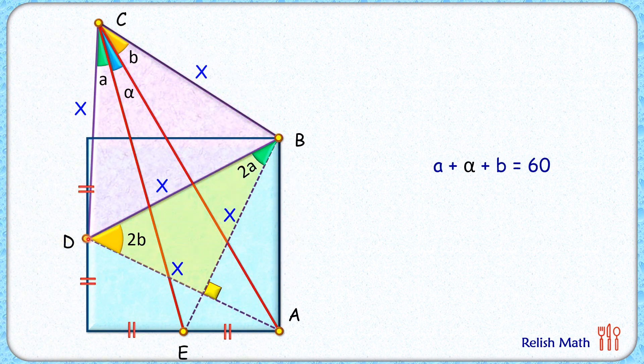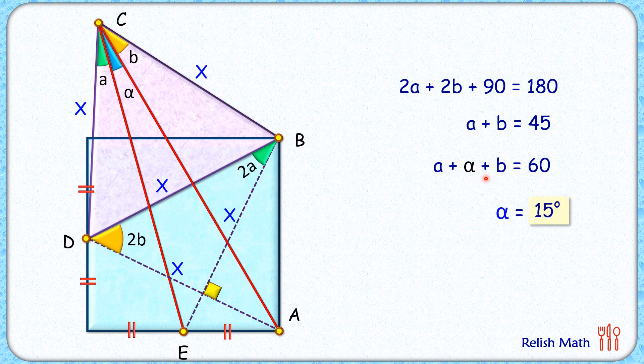Now again coming back to our original triangle which is a right angle triangle, applying angle sum property we'll get 2a plus 2b plus 90 degrees is 180, or a plus b is 45 degrees. Putting this value of a plus b in this equation, we get angle alpha as 15 degrees, and that's our answer.